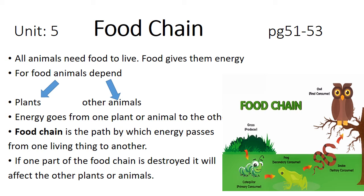We are going to start with unit number 5, and the last topic of this chapter is food chain, covering pages 51 to 53. All animals need food to live — food gives them energy. Animals depend on two things for food: plants and other animals. Energy goes from one plant or animal to the other. Food chain is the path by which energy passes from one living thing to another.